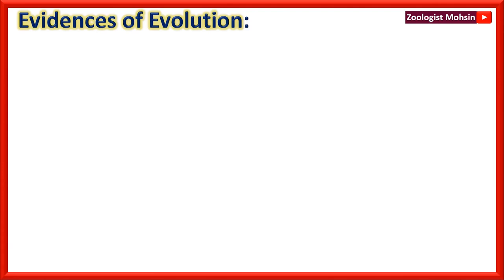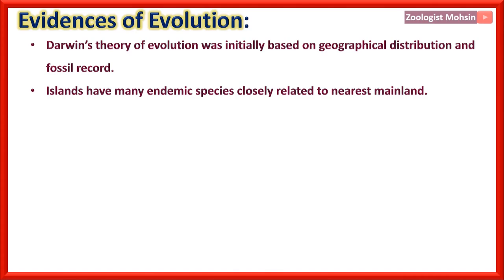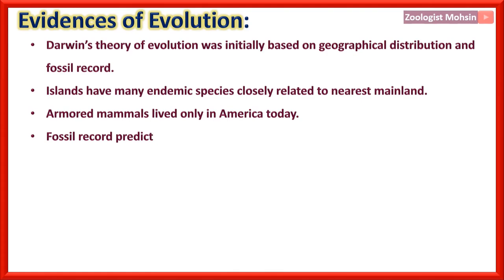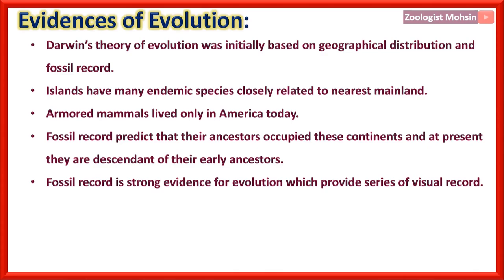Evidences of Evolution: Darwin's theory was initially based on geographical distribution and fossil record. Islands have many endemic species — those found only in a specific region — closely related to nearest mainland species. Armored mammals lived only in America. The fossil record predicts that their ancestors occupied these continents and present species are descendants of early ancestors. The fossil record is strong evidence for evolution, providing a series of visual records.